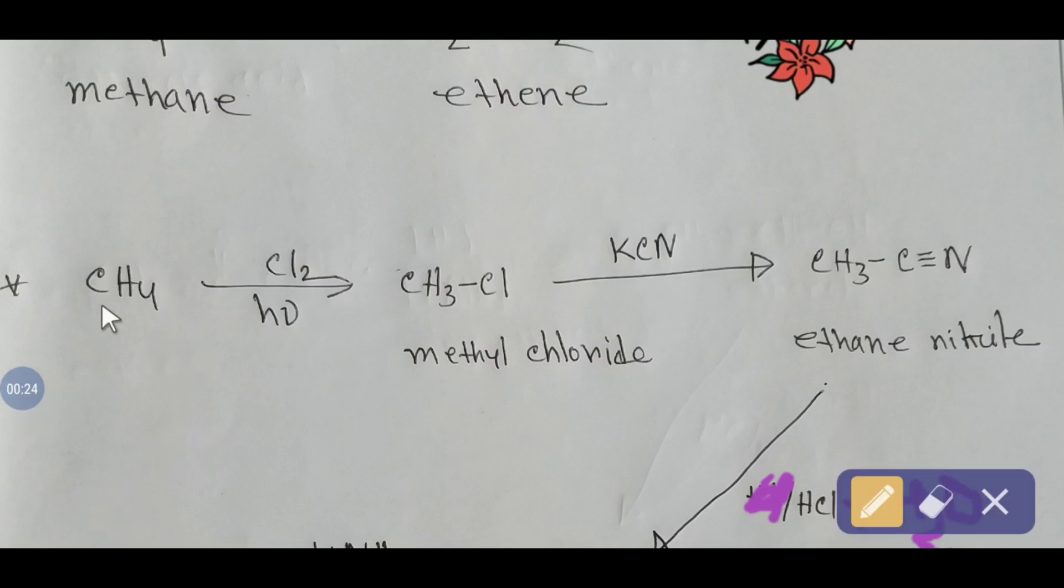This is methane. If you add chlorine in the presence of UV light, you will get methyl chloride or chloromethane. Actually, you will get a mixture of different kinds of alkyl halides, and then you have to separate this methyl chloride.